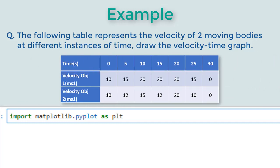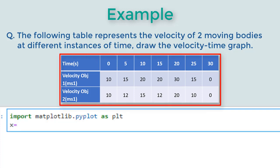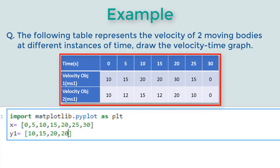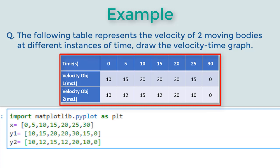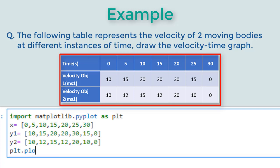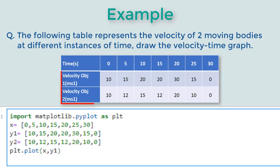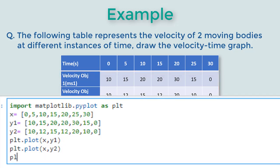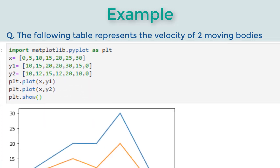In this question the series is already given to us, so we will use Python lists to create x and two y series from the data given and not use numpy arrays. We will then call the plot function with these values. Since we have two y series we will call plot two times for each x and y series. After plot you need to call show to display the graph.